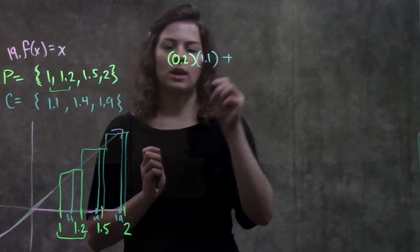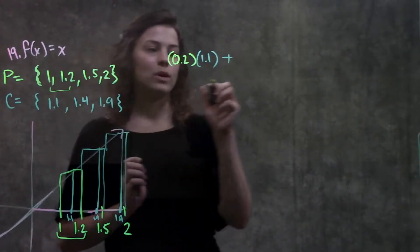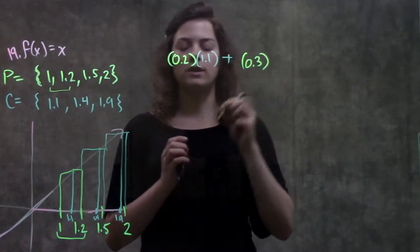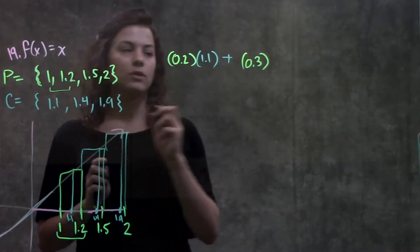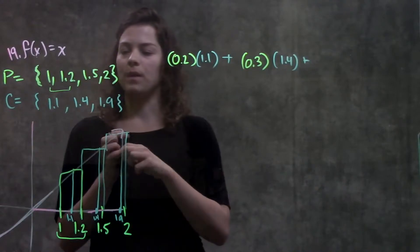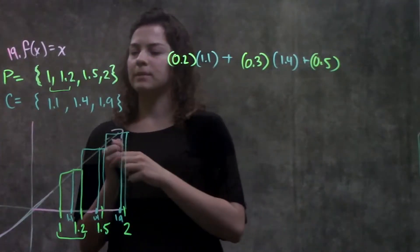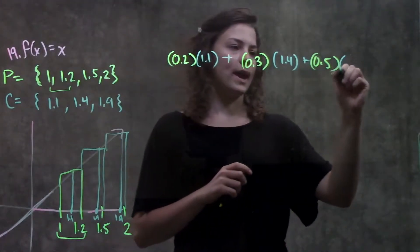And I do that for the next triangle also, or next rectangle. The width between 1.5 and 1.2 is just 0.3 times my height in this interval is 1.4 plus my next rectangle width is 0.5 times my height in this interval is 1.9.